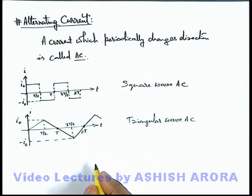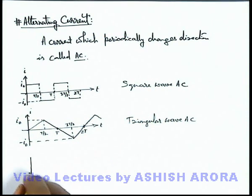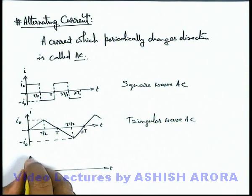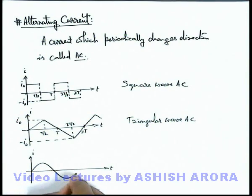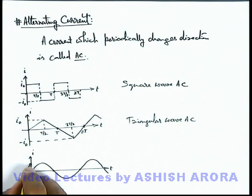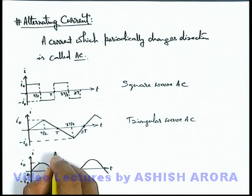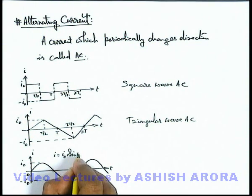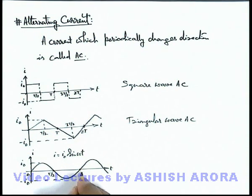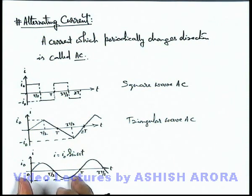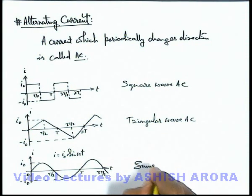Similarly, we can also have a sinusoidal function for the variation of current. If represented by a sinusoidal function, a current oscillating between i₀ and minus i₀ follows a sine curve. The function i can be written as i = i₀ sin(ωt). The time axis shows t/2, t, 3t/2, and so on, with cycle period t. As the current varies with a sinusoidal function of time, this is termed sinusoidal AC.